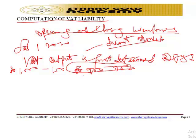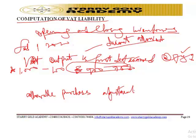In computing VAT liability, the VAT input is determined by applying the VAT rate of 7.5 percent on purchases net of allowable adjustments, such as discount received or returns outward. The VAT liability for the period is then the VAT output less the VAT input.